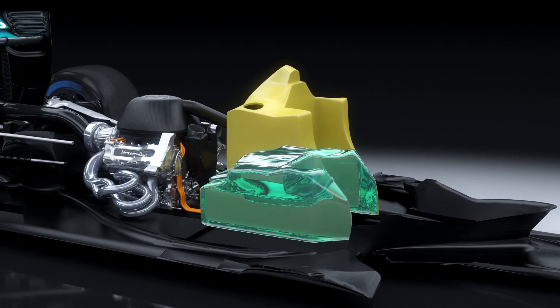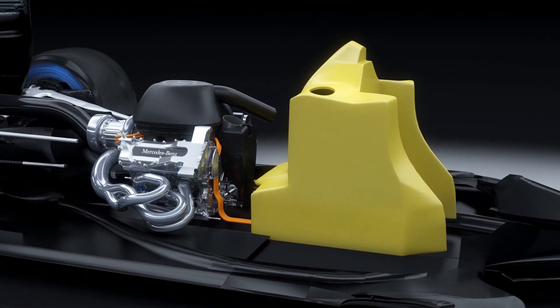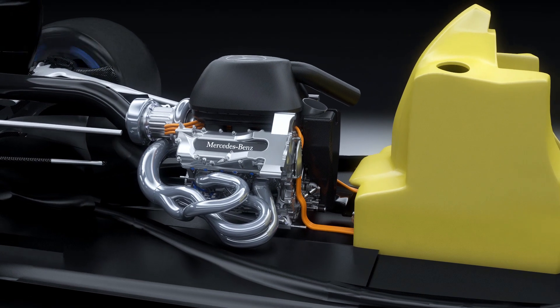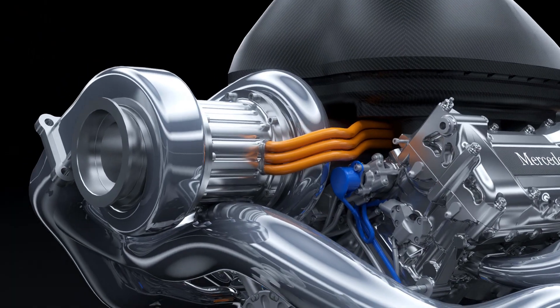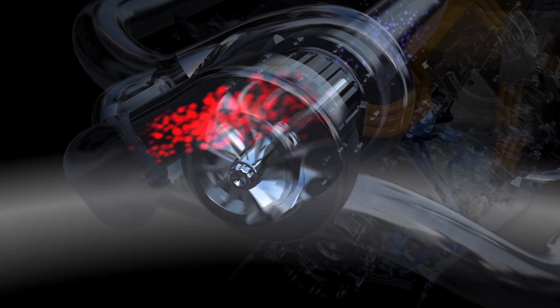Each car may now use just 100 kilograms of fuel per race, equivalent to around 130 liters, which means it must now deliver top performance on one-third less fuel. It is achieved with a downsized 1.6 liter turbo-hybrid engine.